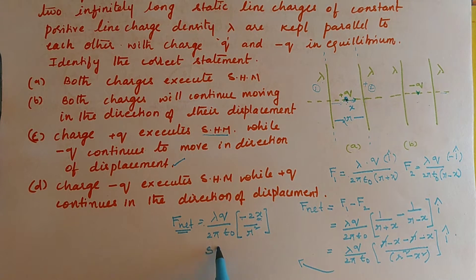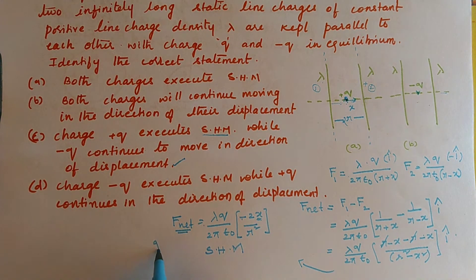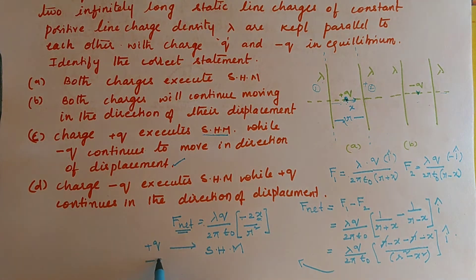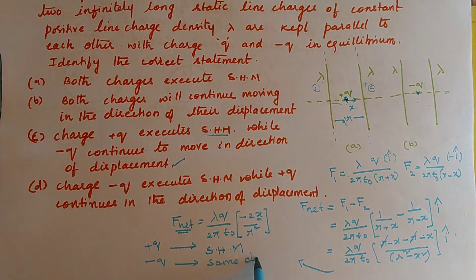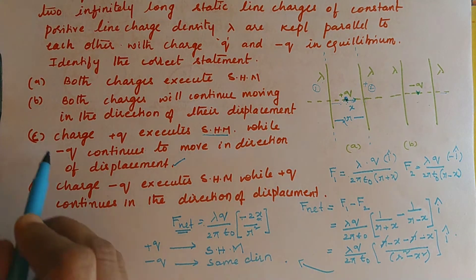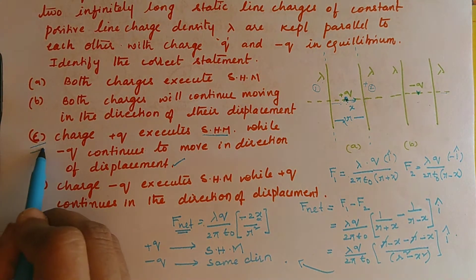So +q executes SHM while −q travels in the same direction of displacement. The answer is option C.